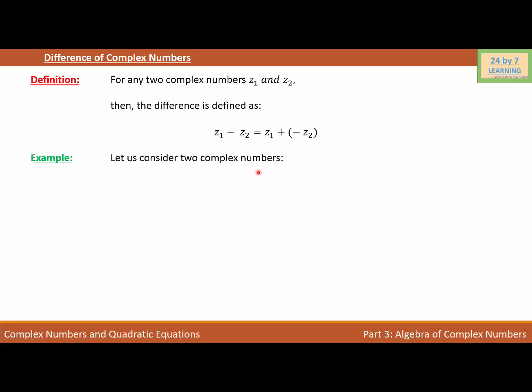In order to understand the difference of complex numbers, let's consider an example. Let us consider two complex numbers: z1 equals a plus bi and z2 equals c plus di. Then z1 minus z2 equals a plus bi minus c plus di.